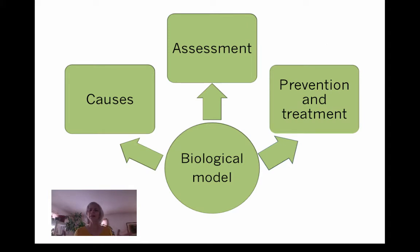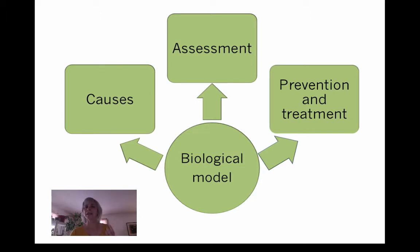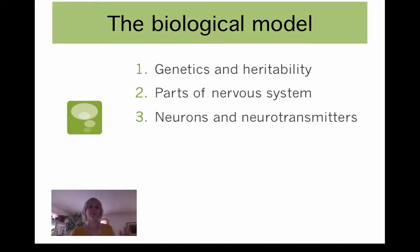This is part of our biological model. The biological model, like any other model we're going to talk about, pays attention to causes, assessment, and prevention and treatment. In this video we're going to talk about genetics and heritability, then think about the nervous system in general, and finally talk about neurons and neurotransmitters — so in three short videos.